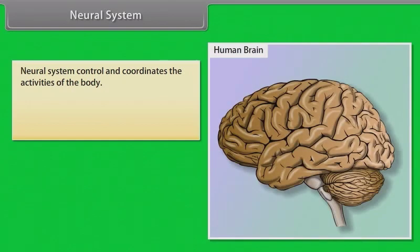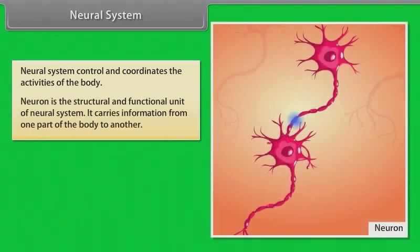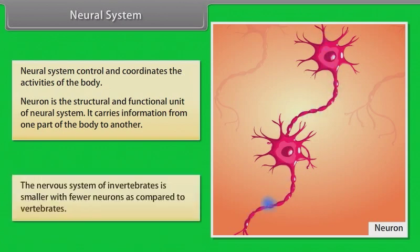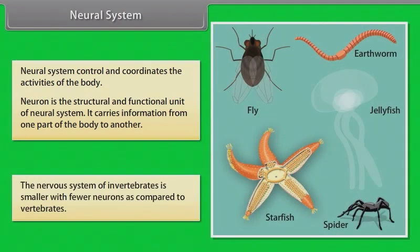The neural system controls and coordinates the activities of the body. The neuron is the structural and functional unit of the neural system. It carries information from one part of the body to another. The nervous system of invertebrates is smaller with fewer neurons as compared to vertebrates.